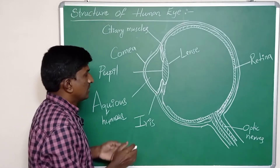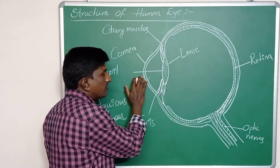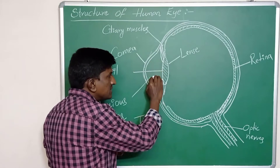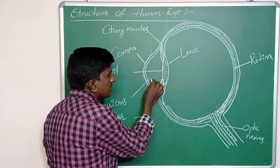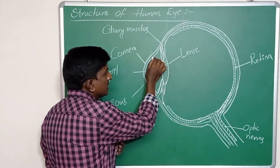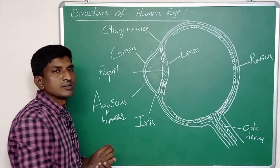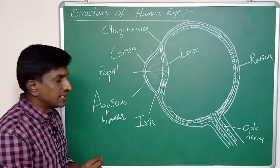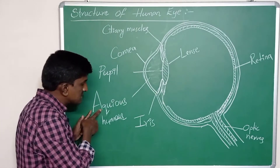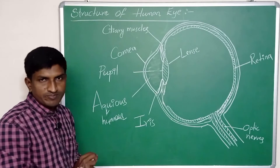After the cornea, a space is there. In this space a liquid is present in that area, and that is called aqueous humor.